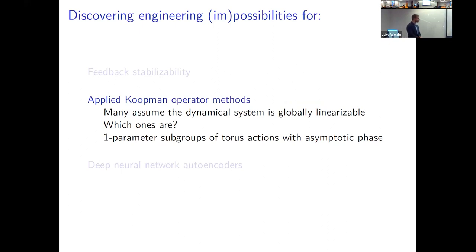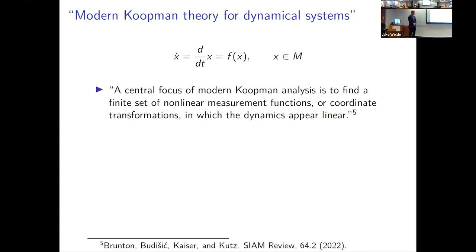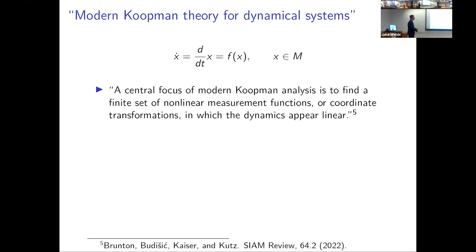I'd like to turn now to the Koopman part of my talk. Applied Koopman operator methods — many of them — assume that the dynamical system is globally linearizable in a sense I'll explain. From a recent SIAM review survey by Brunton and collaborators, and also an influential survey by Igor Mezić called 'Applied Koopmanism' from around 2012: a central focus of modern Koopman analysis is to find a finite set of nonlinear measurement functions or coordinate transformations in which the dynamics appear linear, even though they're not linear to start.